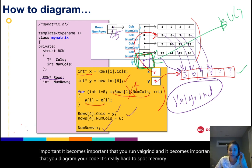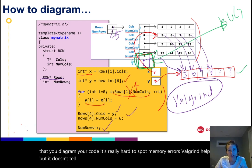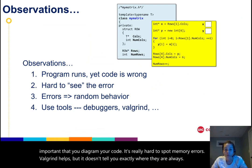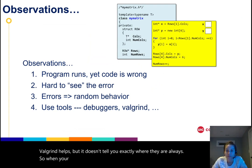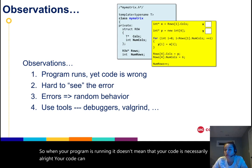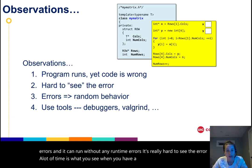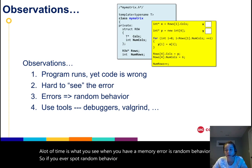Valgrind helps, but it doesn't tell you exactly where they are always. So when your program is running, it doesn't mean that your code is necessarily alright. Your code can be completely wrong and it will run without compiler errors and it can run without any runtime errors. It's really hard to see the error. A lot of times what you see when you have a memory error is random behavior. So if you ever spot random behavior in your code, it's probably a memory problem.